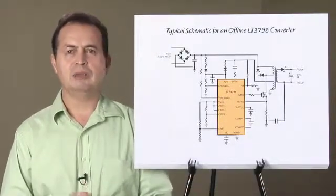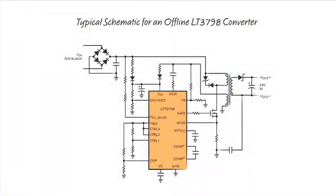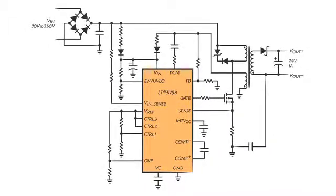My discussion today will be about the LT3798, a complete solution for constant voltage or constant current isolated flyback applications that require no optocoupler for regulation. It is ideal for high AC input offline applications, but works just as well for high DC input applications.